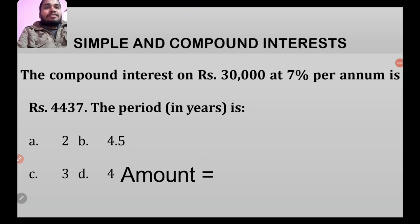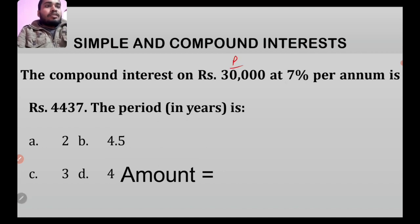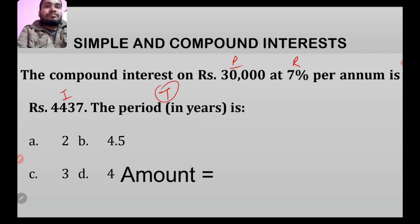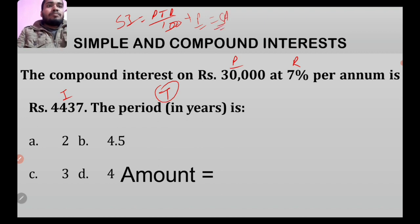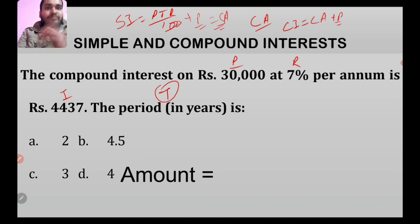Now let's come to today's topic, and that is simple and compound interest. We have a question: compound interest on 30,000 at the rate of 7% for a number of years is 4,437. We need to find the time. Simple interest formula: SI equals P times T times R divided by 100. We need to work with the rate of 7%.